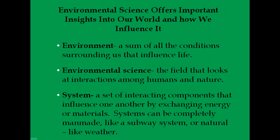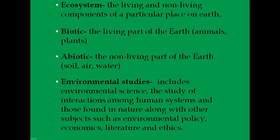That takes us to systems, because we're looking at all these systems interacting together. A system is simply interacting components. They can be manmade, like New York City's subway system, or natural systems like the rock cycle, weather cycles, and the water cycle. An ecosystem is composed of living and non-living components — biotic and abiotic. Environmental studies examine interactions among human systems and those found in nature.